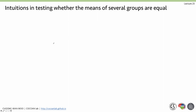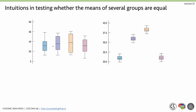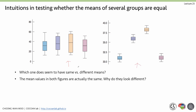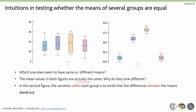If you see these two graphs, which one seems to have the same versus different means? This one seems to have the same means and this one has different means — but the mean values in both figures are actually the same. They look different because of the variance.